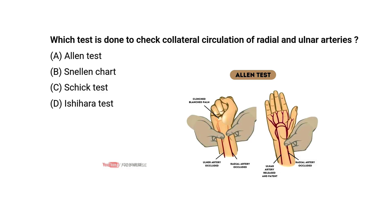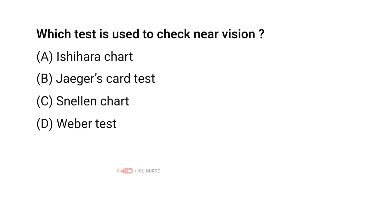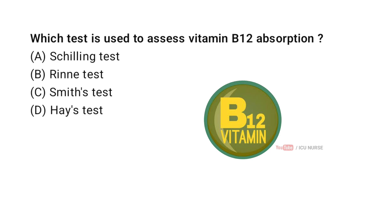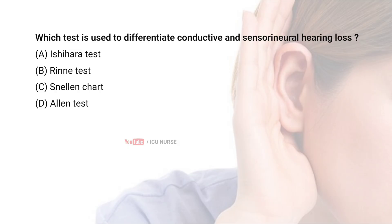Which test is done to check collateral circulation of radial and ulnar arteries? Correct answer A: Allen test. Which test is used to check near vision? Correct answer B: Jaeger's card test. Which test is used to assess vitamin B12 absorption? Correct answer A: Schilling test. Which test is used to differentiate conductive and sensorineural hearing loss? Correct answer B: Rinne test.